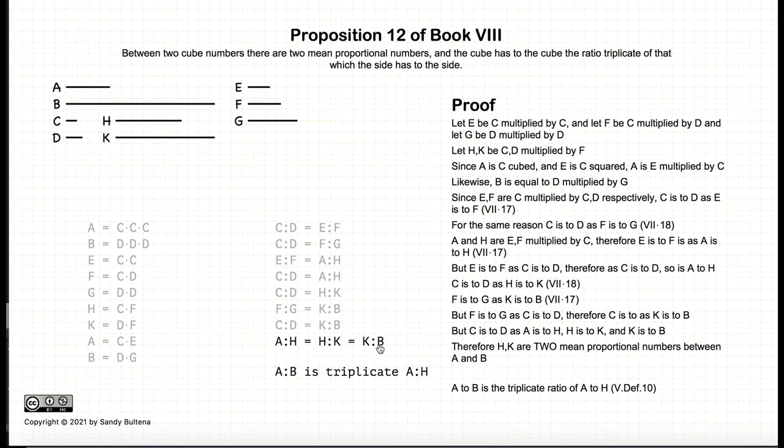Now, a to b, by definition, is the triplicate ratio of a to h. Again, that's by definition. And since a to h is equal to c to d, then a to b is also the triplicate ratio of c to d.